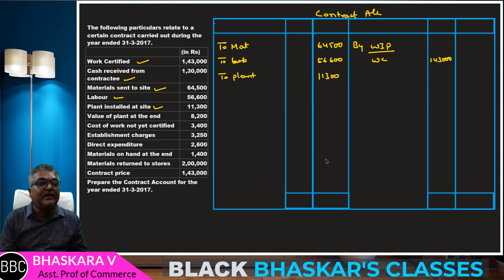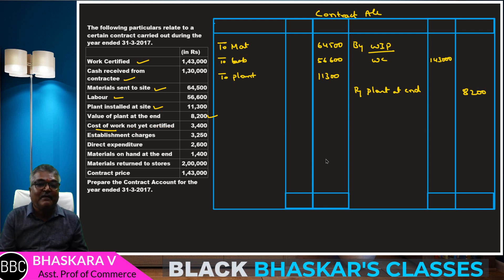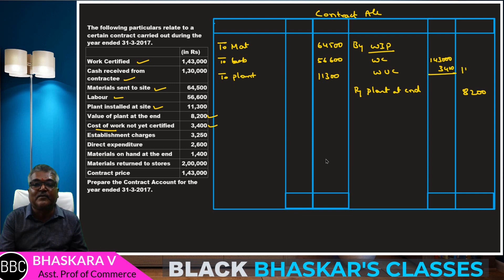Next, value of plant at the end — by plant at end: 8,200. Cost of work not yet certified — work uncertified: 3,400. Total comes to 1,46,400.